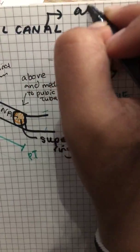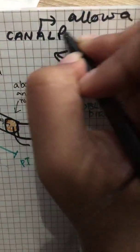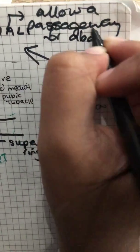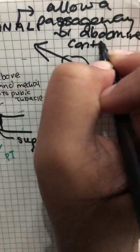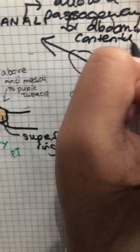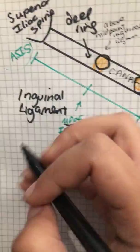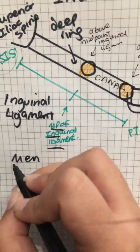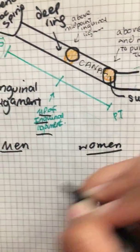The purpose of the inguinal canal is to allow a passageway for abdominal contents. What passes through it is different in men and in women, so let's talk about what passes through the inguinal canal in men and what passes through in women.